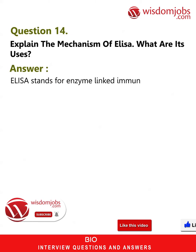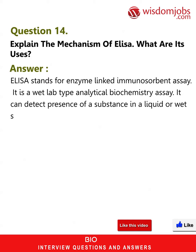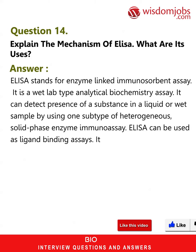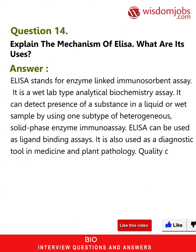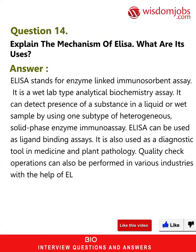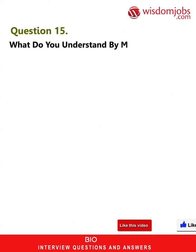Question 14: Explain the mechanism of ELISA. What are its uses? Answer: ELISA stands for enzyme-linked immunosorbent assay. It is a wet lab type analytical biochemistry assay. It can detect the presence of a substance in a liquid or wet sample by using one subtype of heterogeneous solid-phase enzyme immunoassay. ELISA can be used as a ligand binding assay. It is also used as a diagnostic tool in medicine and plant pathology. Quality check operations can also be performed in various industries with the help of ELISA.